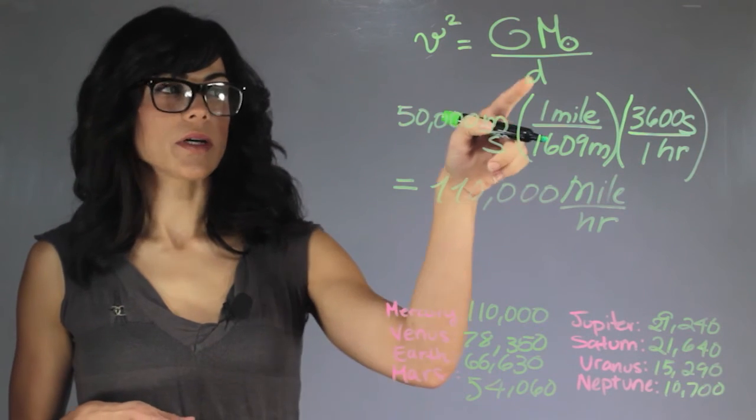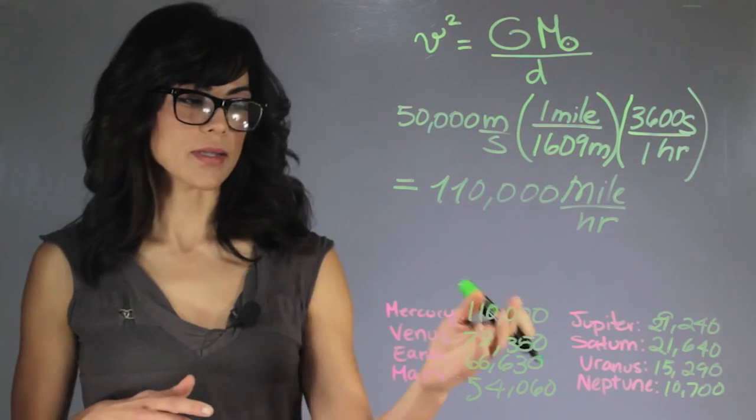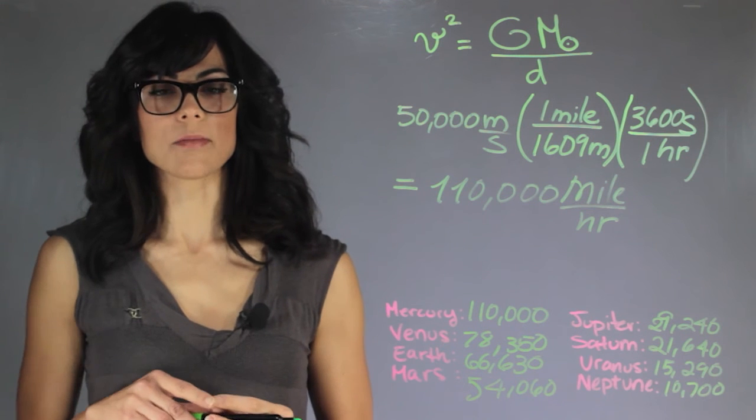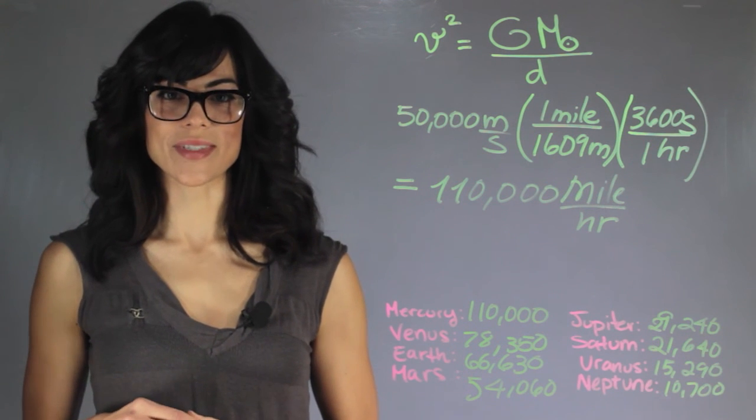So you can try to plug in the distances and calculate yourself if you want to. But this is the orbital speed of the planet in miles per hour. My name is Aileen Perez, and I'm an astrophysicist.